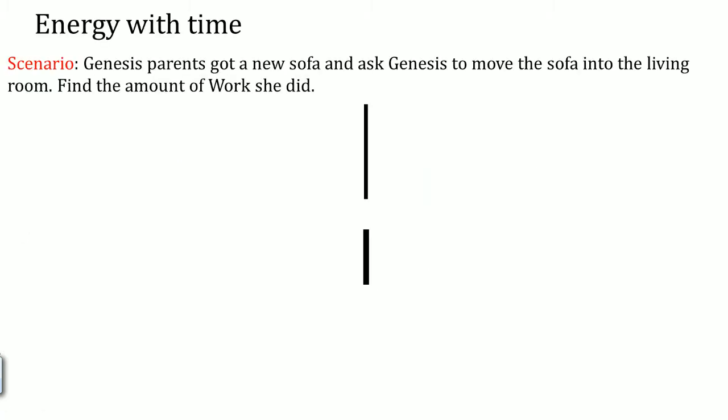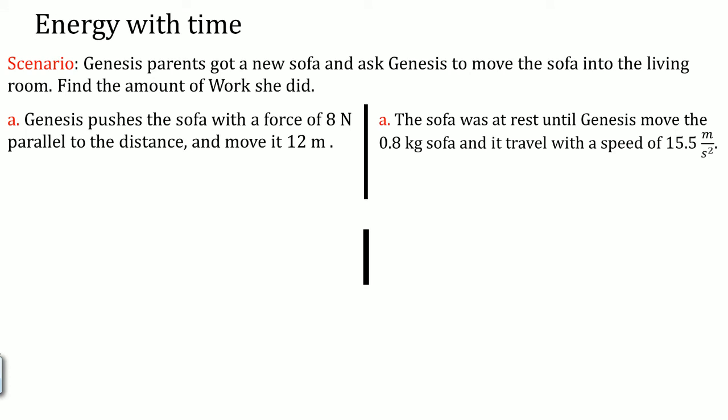Before we talk about that, let's talk about energy. Normally when we talk about energy, we talk about force times the distance or the change in kinetic energy. So let's do a problem on that first. Here's the scenario. Genesis' parents got a new sofa and asked Genesis to move that sofa into the living room. Find the amount of work she did. So Genesis pushes the sofa with an 8 newton force parallel to the distance and moves it 12 meters. Or you could have a question that says the sofa was at rest until Genesis moved it. It is a 0.8 kilogram sofa and it traveled with a speed of 15.5 meters per second squared.